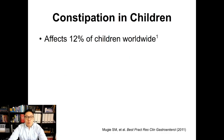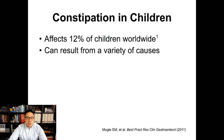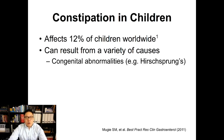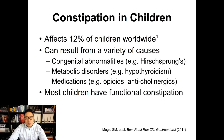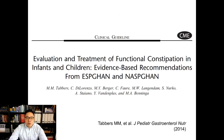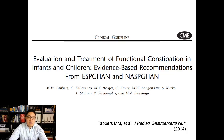Constipation is very common — it affects 12% of children around the world in population-based studies. It can result from a variety of causes: congenital problems, metabolic disorders, and medications. But the vast majority of children have functional constipation with no underlying medical problem. A great reference are the evidence-based recommendations from the European and North American GI societies — if you google 'constipation guidelines children,' this will be one of the first results.